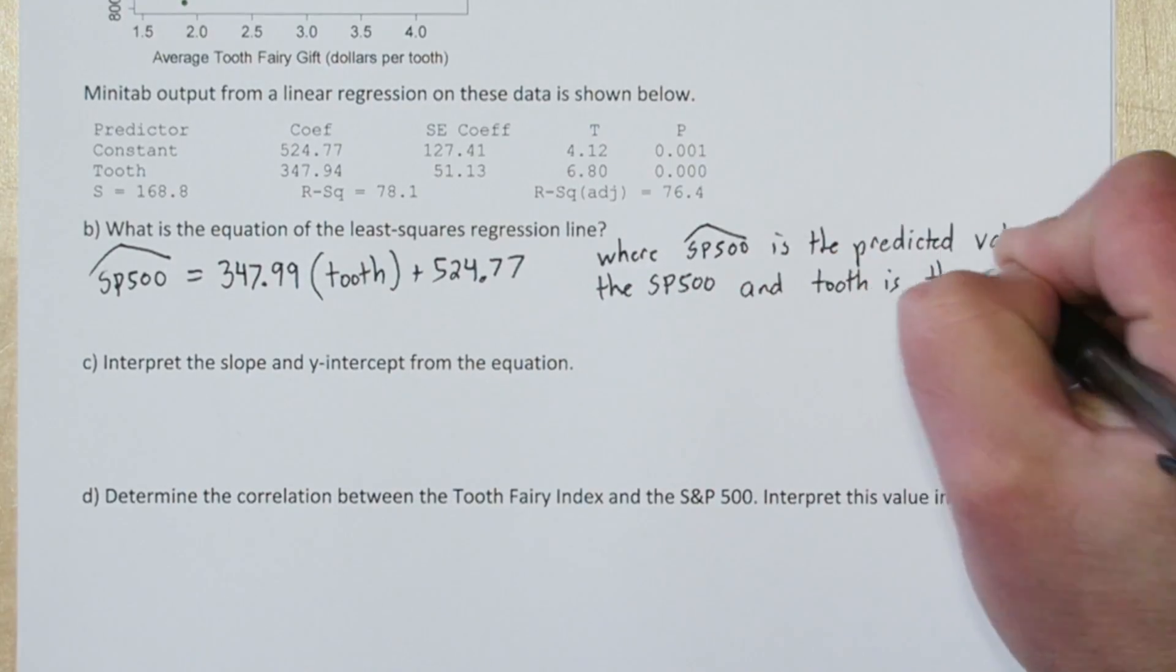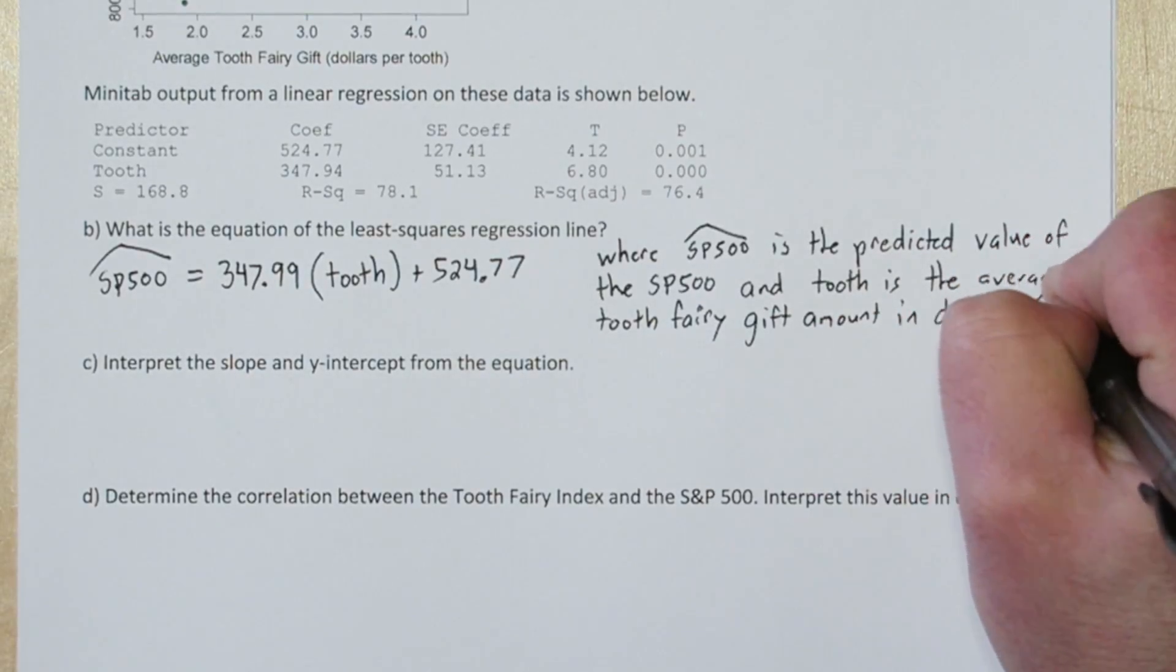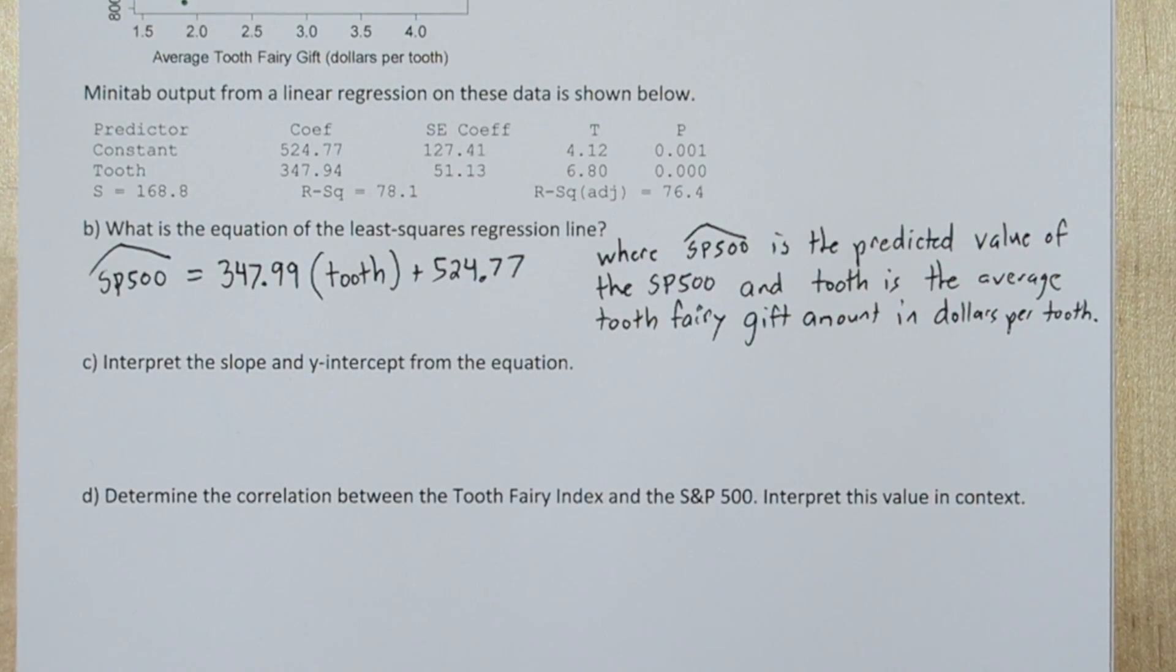So we'll say where S&P 500 hat is the predicted value of the S&P 500, and tooth is the average tooth fairy gift amount in dollars per tooth.